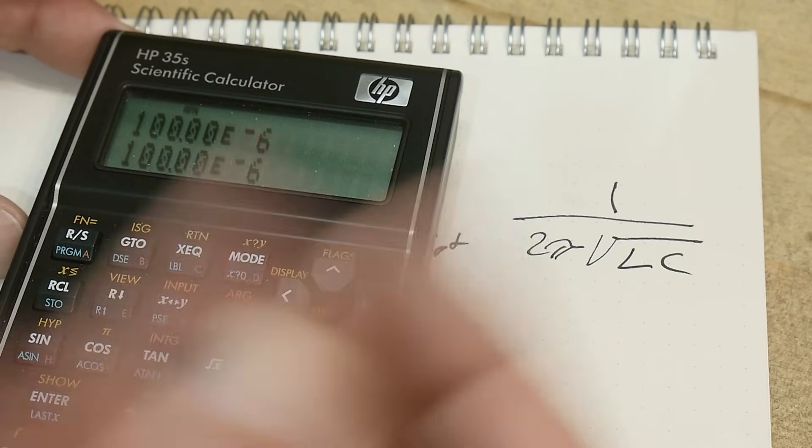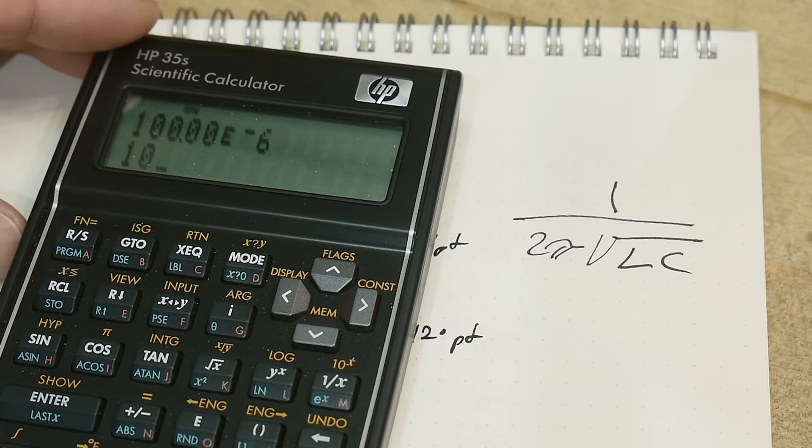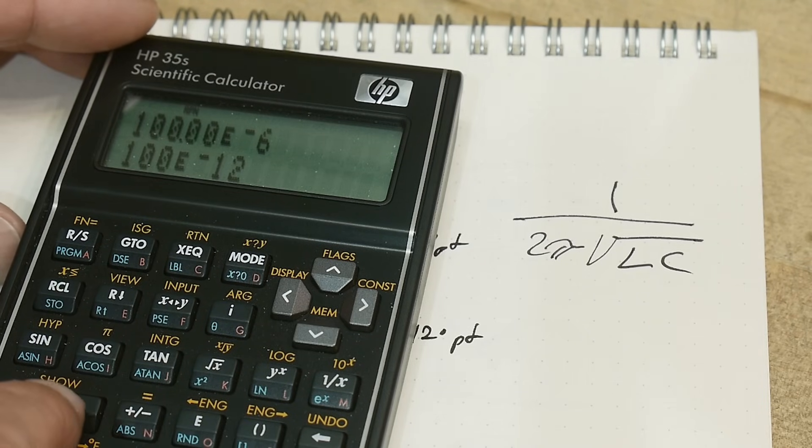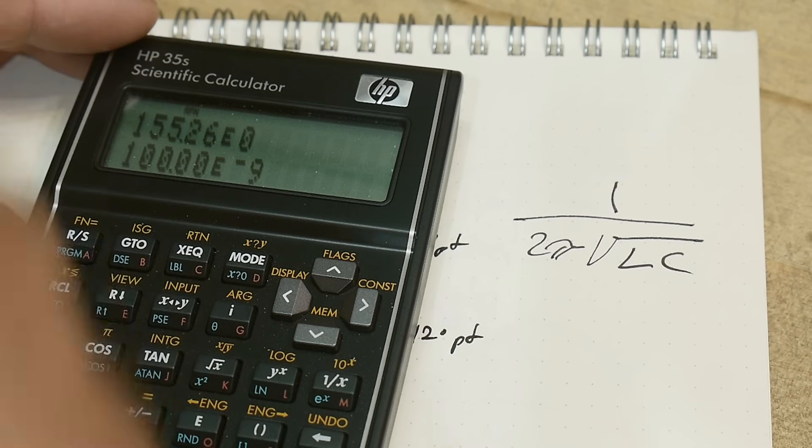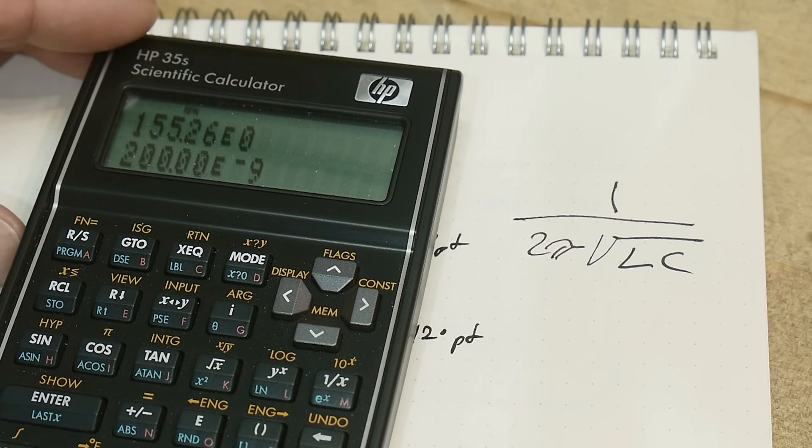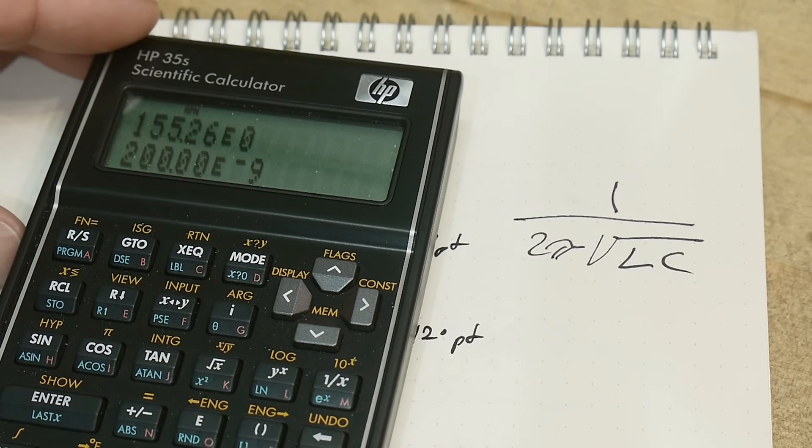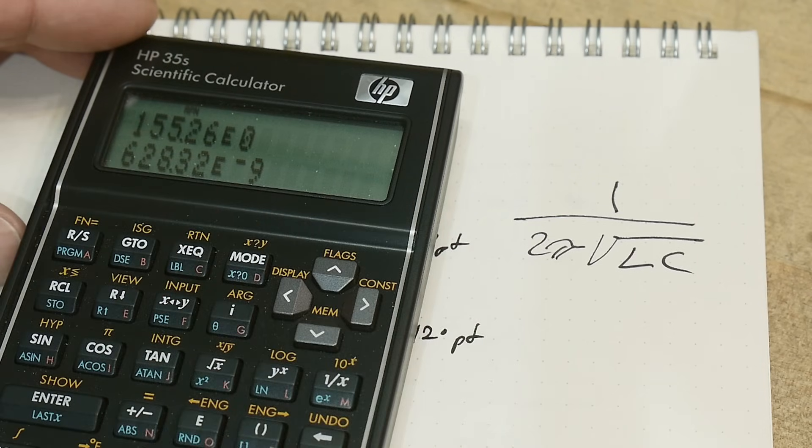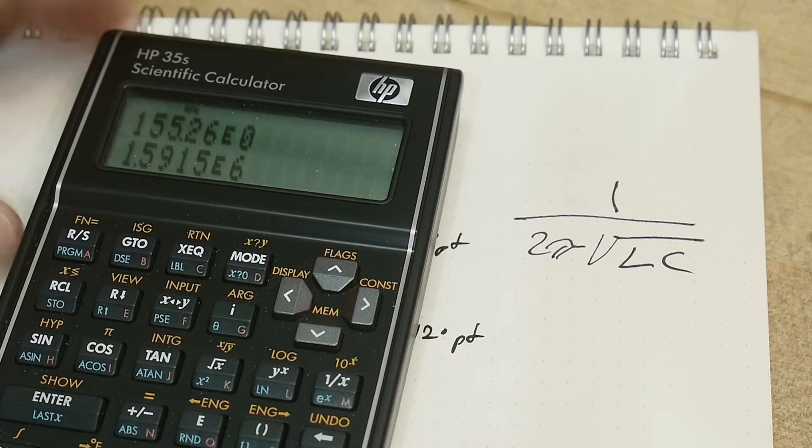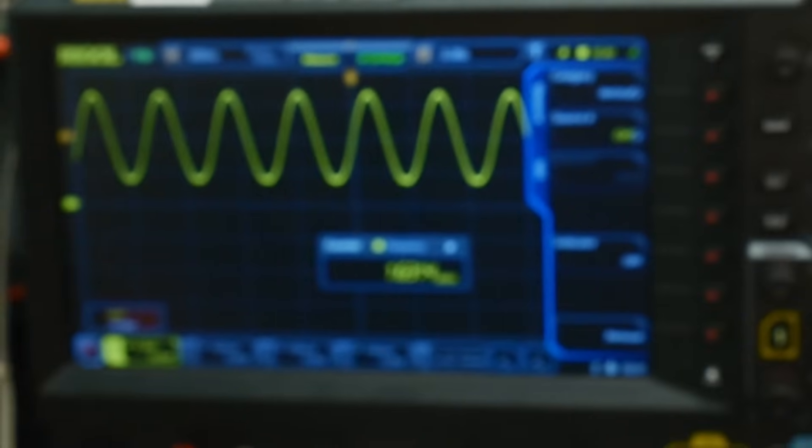100 picofarads - multiply those together, take the square root of that, take two times that, take π times that. If we can remember where π is on this calculator - π is there - π times and one over. 1.59 megahertz and we have 1.6 megahertz.